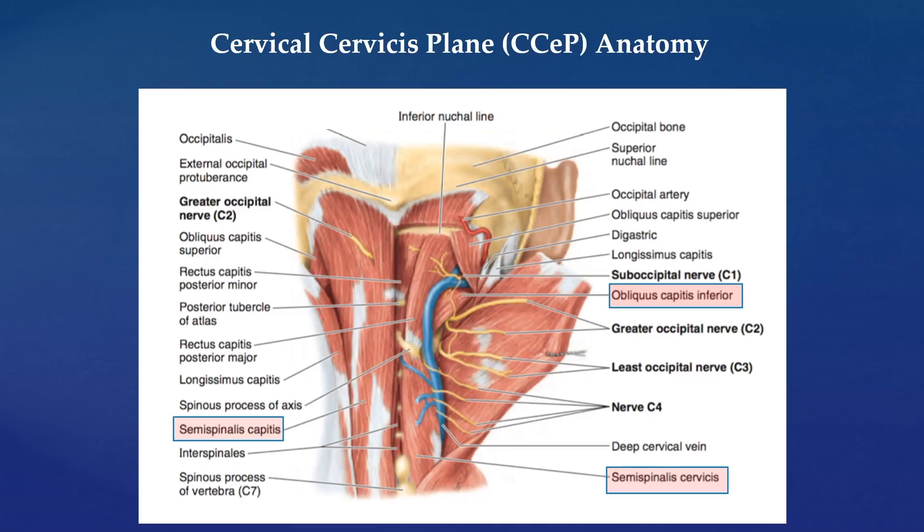The deep cervical vein and artery are located in this fascial plane as well.